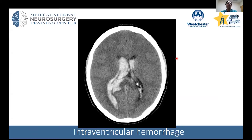This is a different type of bleeding pattern — intraventricular hemorrhage. Here we see the ventricles, which should be nice and dark, are actually bright and filled with blood.